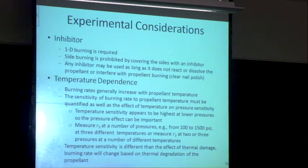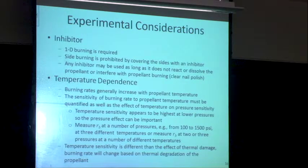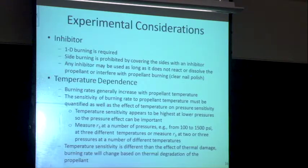A couple quick comments about other experimental considerations. The use of an inhibitor creates one-dimensional burning and gets rid of flame propagation down the side — make sure it doesn't react or dissolve with the propellant. Most people use paint or clear nail polish. Temperature dependence is very important to monitor because burning rates are sensitive to initial temperature. Gathering data on temperature sensitivity significantly increases the data matrix, since it's also a function of pressure — at each pressure, I've got to condition the grain to different temperatures to back out temperature sensitivity.